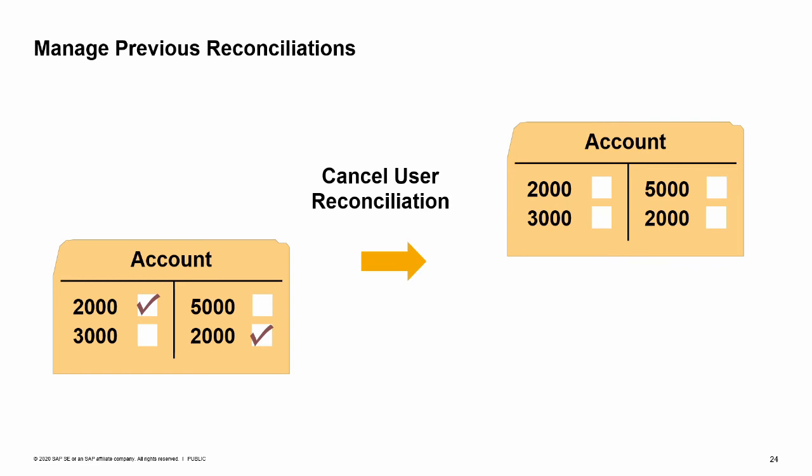The Manage Previous Reconciliations function allows you to review or cancel a user reconciliation. This function does not allow you to reverse reconciliation postings — the postings still exist even though the reconciliation has been cancelled. If you want to reverse these postings, you must reverse them in the general ledger in the usual way by choosing Data Cancel in the journal entry display. To cancel user reconciliations for business partners or GL accounts, choose the Manage Previous Reconciliations option under the Internal Reconciliations area of either the business partners or financials module.